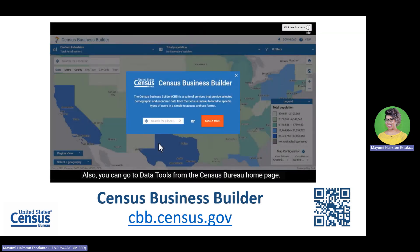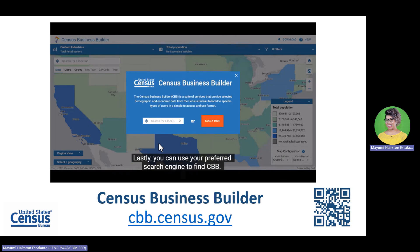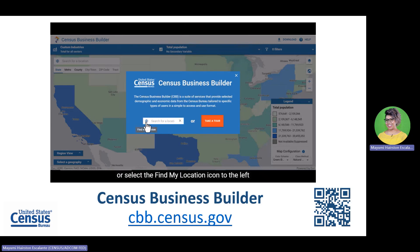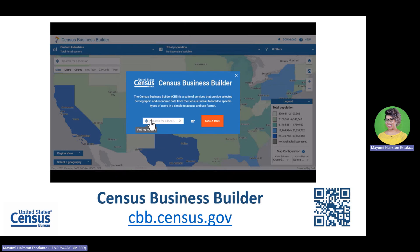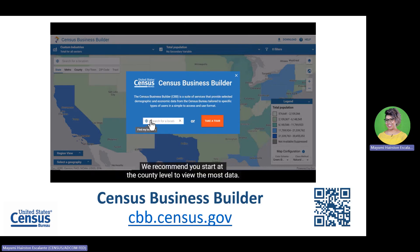You can also go to the Data Tools from the Census Bureau homepage, or use your preferred search engine to find CBB. You can either type in a particular geography or select the Find My Location icon to the left of the search box to find your location — you will need to have location services turned on for that to work. We recommend you start at the county level to view the most data.